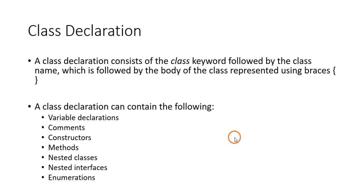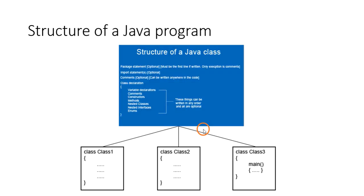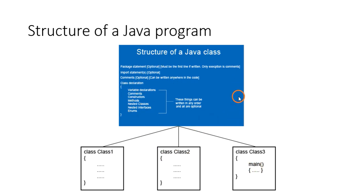The structure of a Java program contains one or more classes — here you have class one, class two, and class three. As mentioned earlier, one of the classes will contain the main method. All these classes will follow the class structure. Not necessarily the entire structure, but the essential parts.